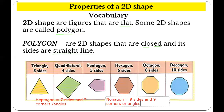So heptagon has 7 sides and 7 corners or angles. Nonagon has 9 sides and 9 corners or angles. Okay, let's move on.